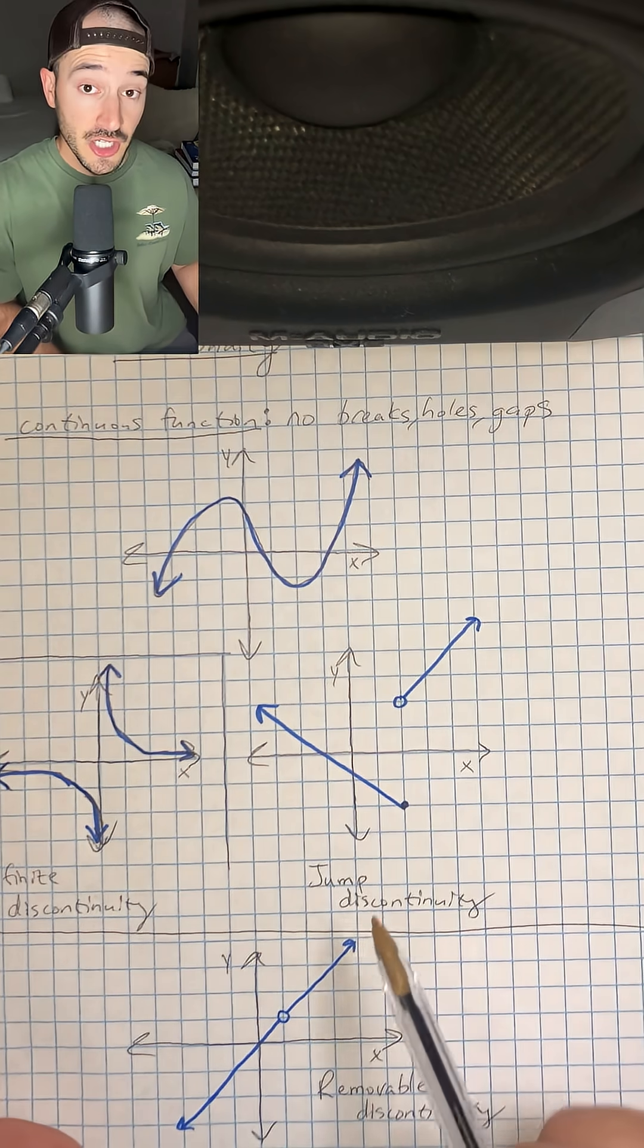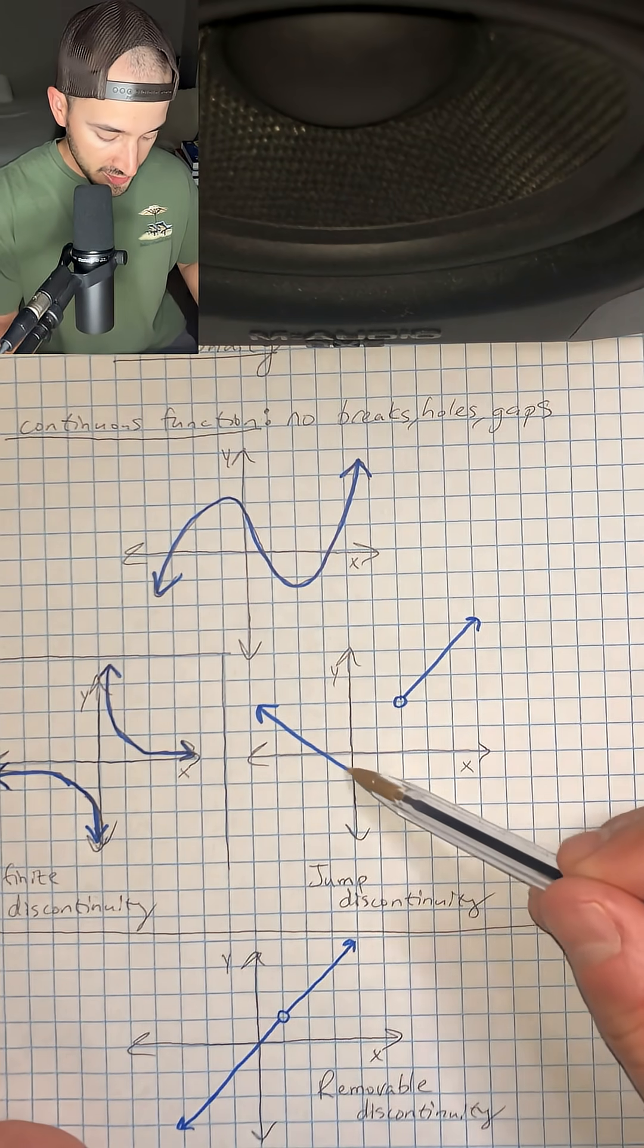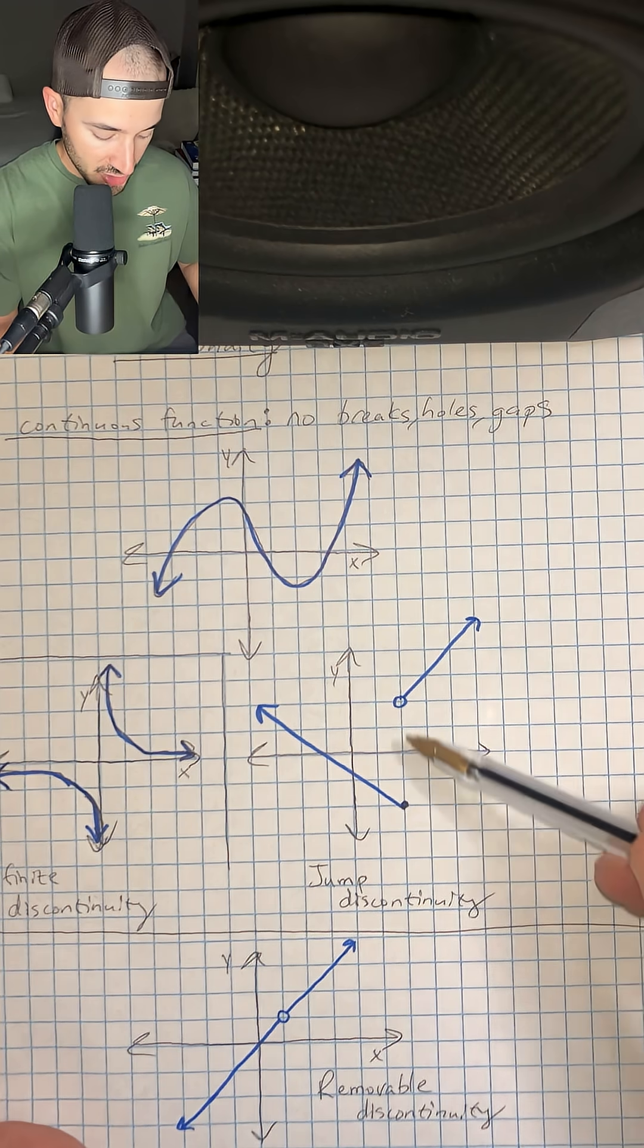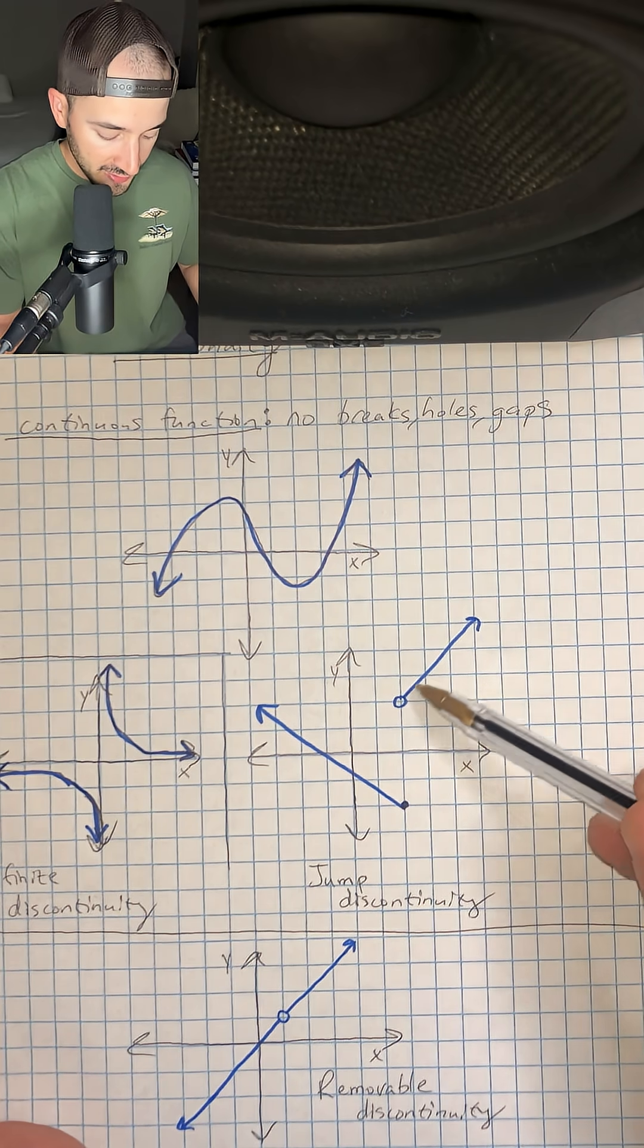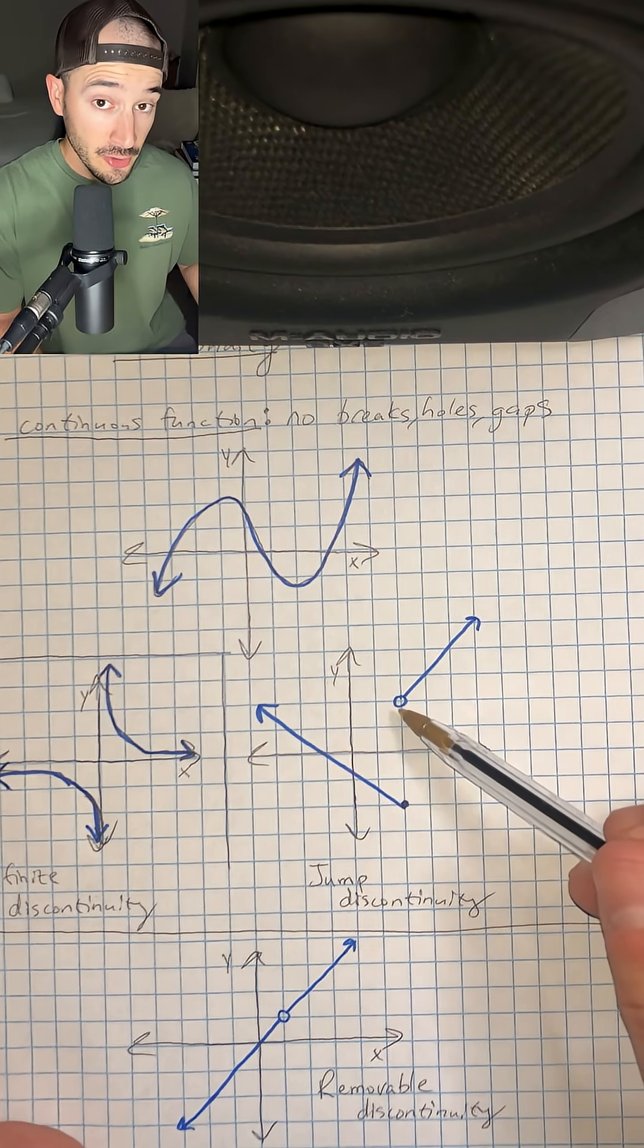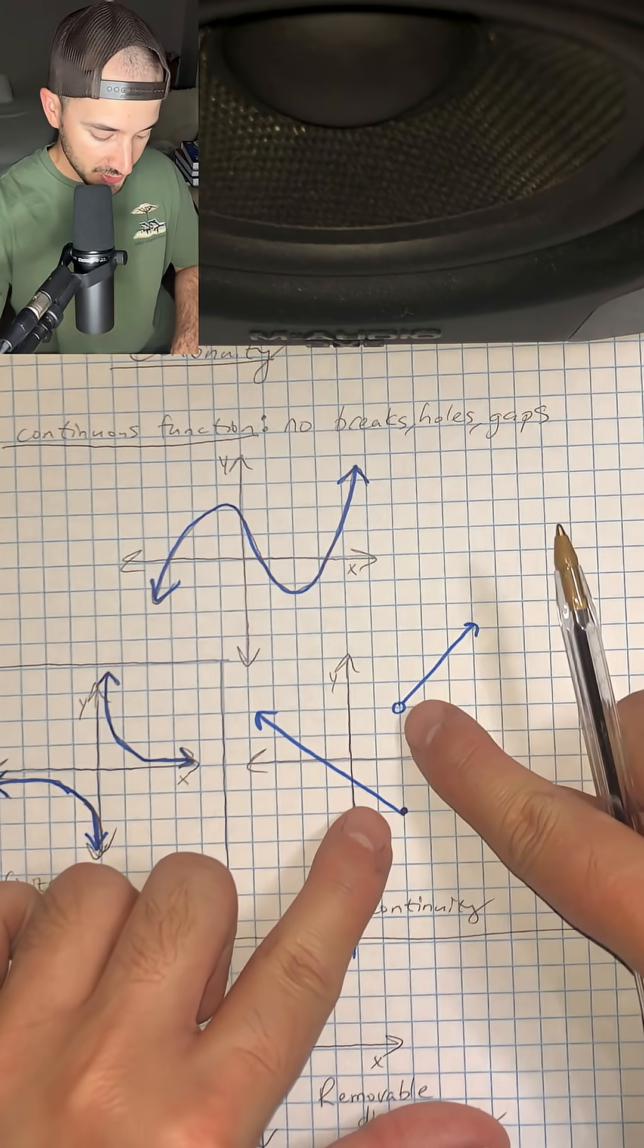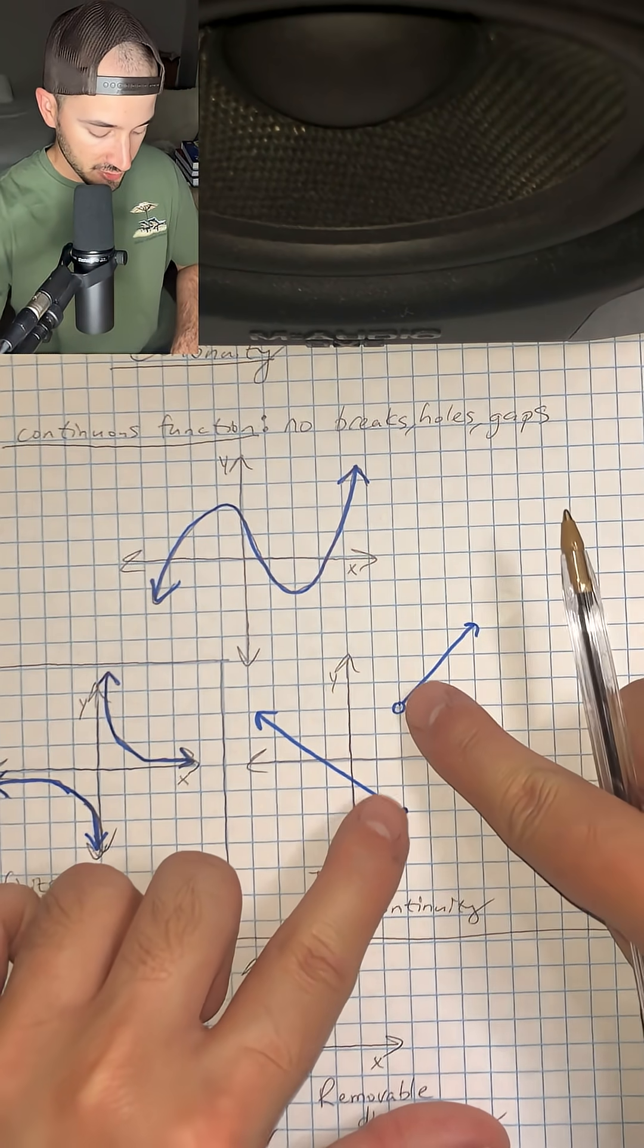Next, we have a jump discontinuity, and just like it sounds, our graph is going this way, we have a point, and then it jumps up here and continues that way. Okay, so that is called a jump discontinuity, because as we approach x equals two from both sides, we actually have two separate values.